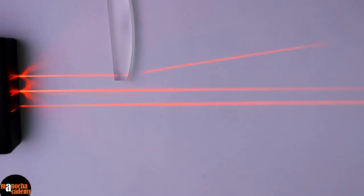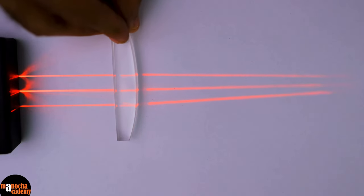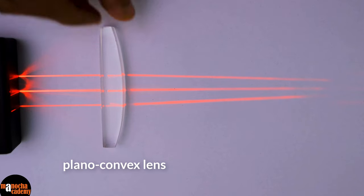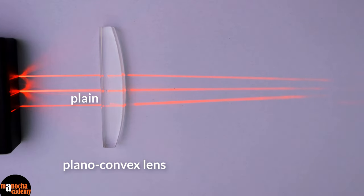Next, let's try out this lens. Do you know what is this lens called? It is called a Plano-Convex lens. Since it is plain, flat on one side and convex on the other side.